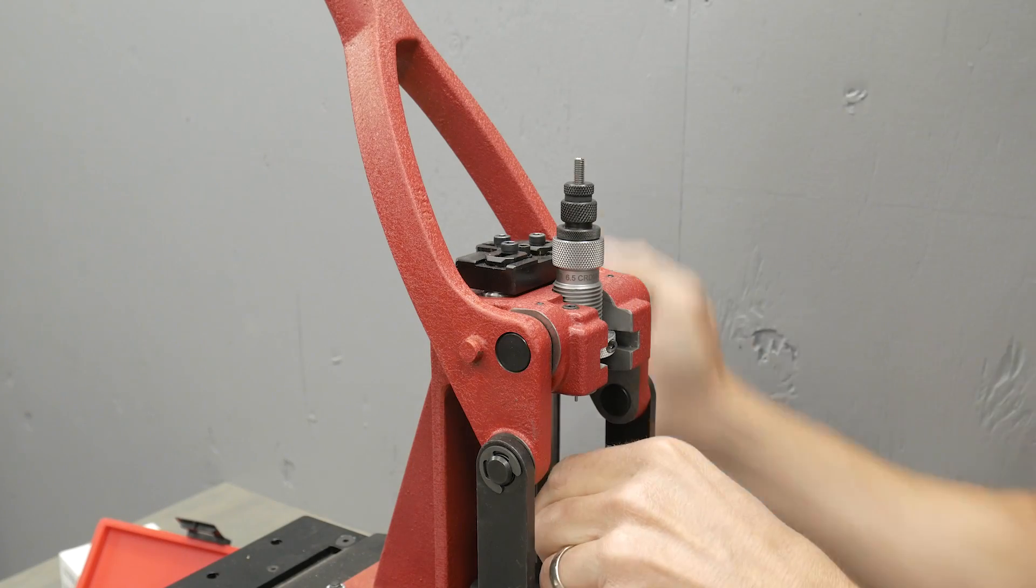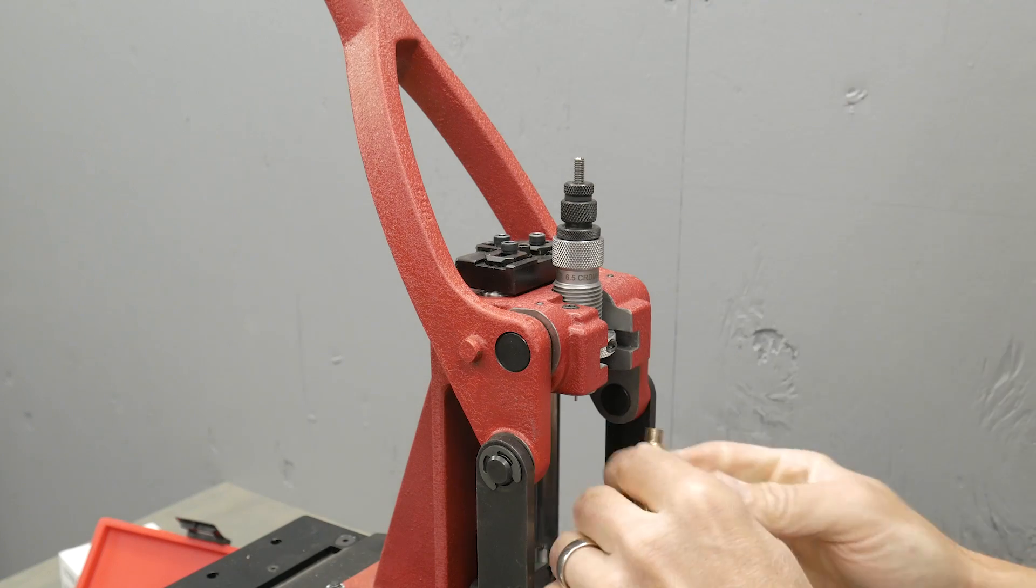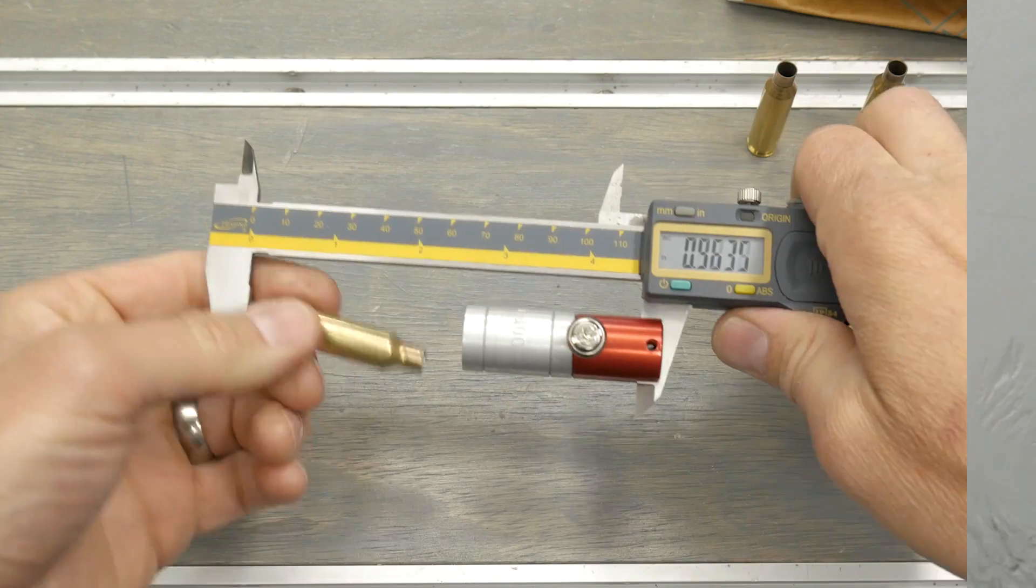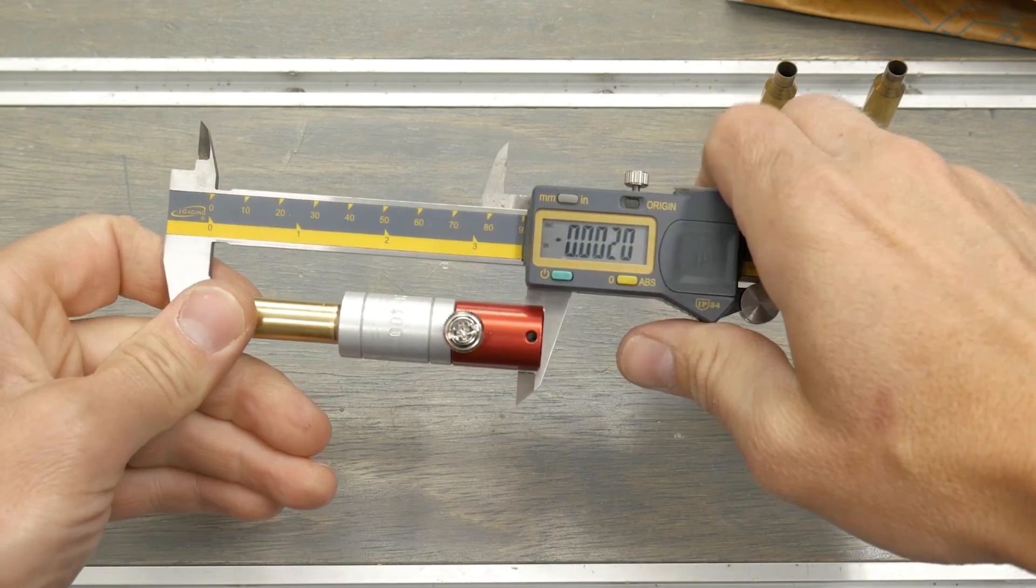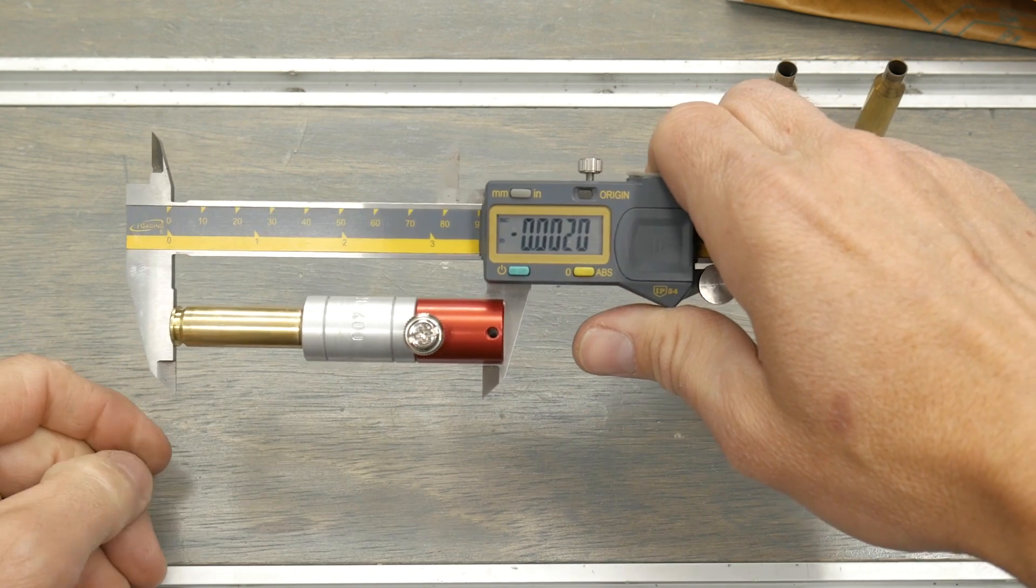I put a slight film of Forster lube on the neck. I'm going to size and deprime there. Now we can check our bump. Back into the Headspace Comparator with our calipers. And we can see we're about negative two thousandths of an inch.